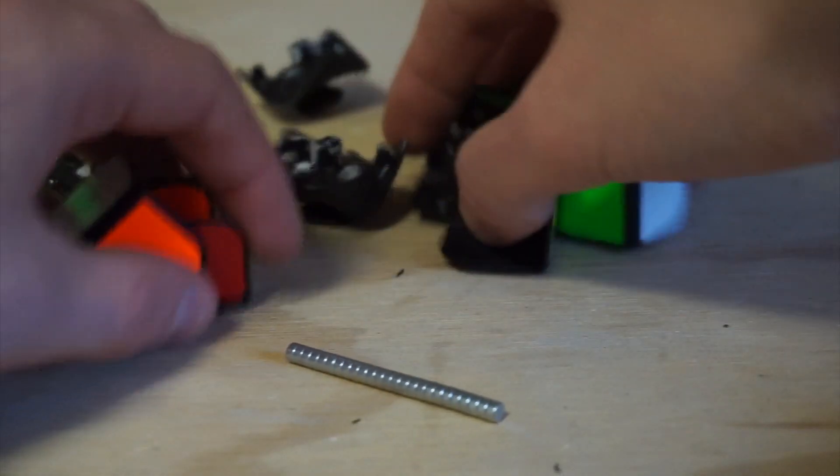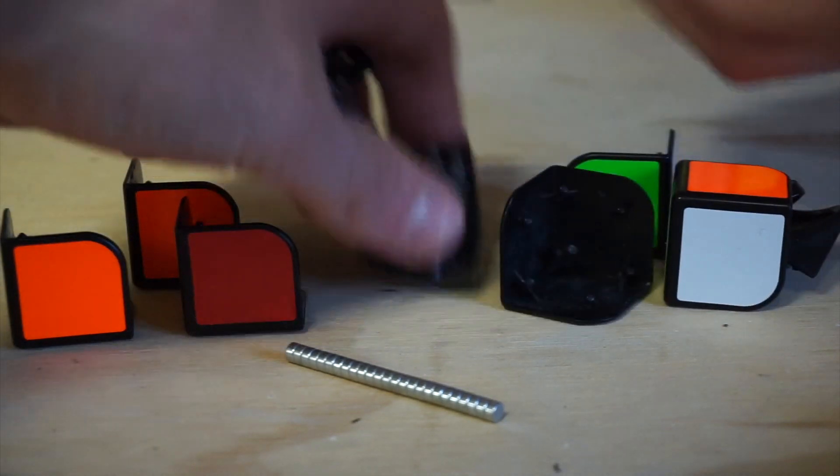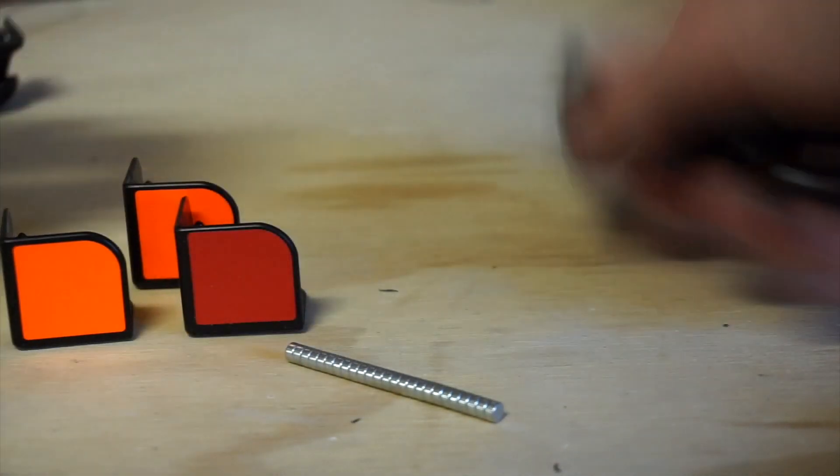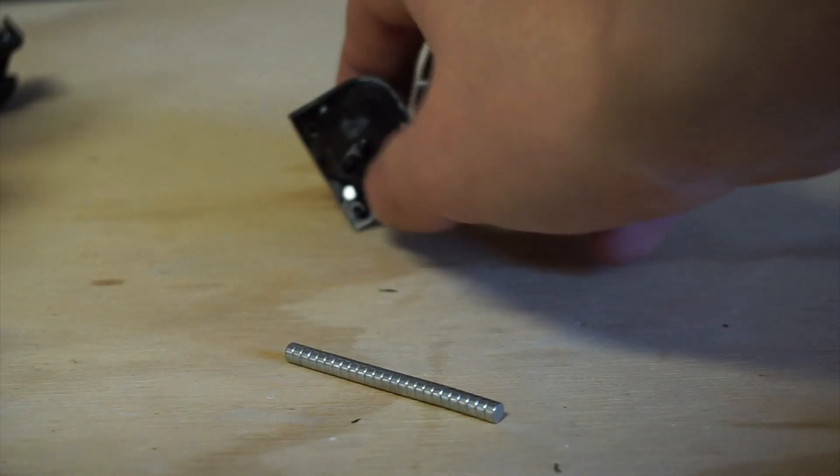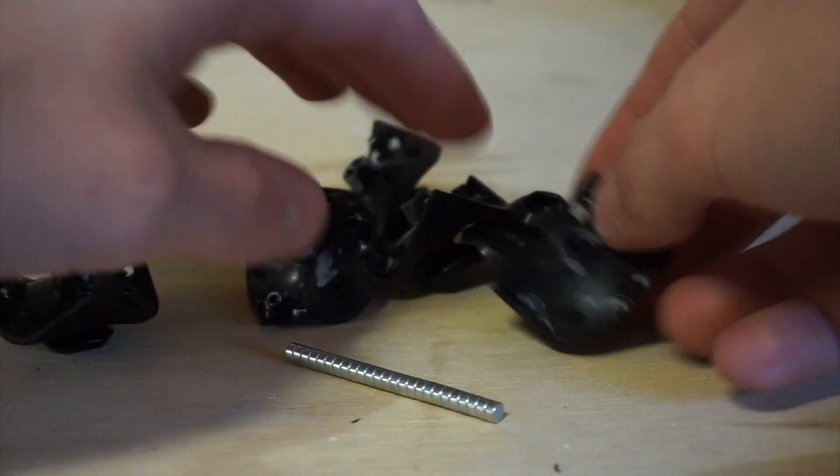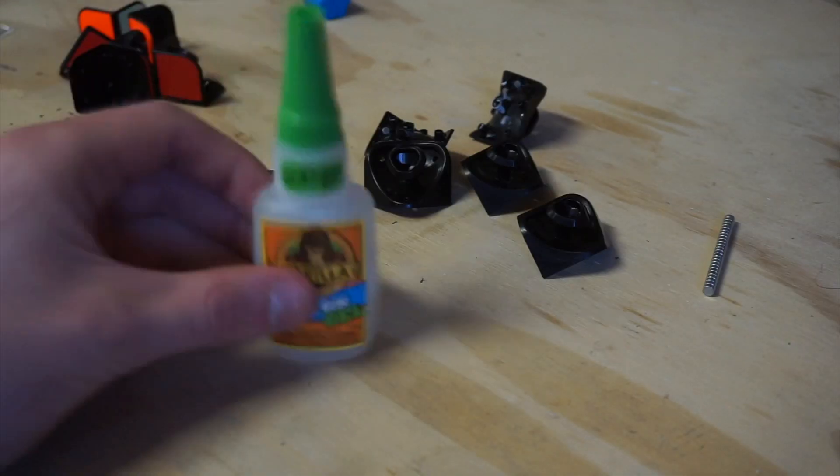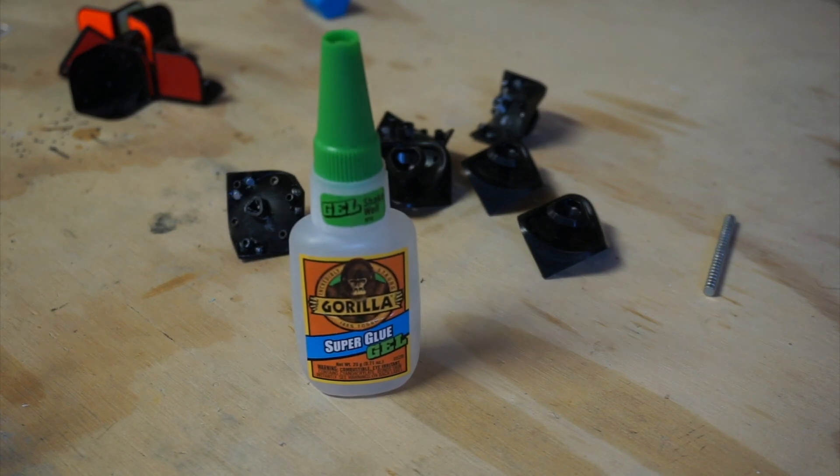After I'd done the same thing to all the different pieces, I took all the outer caps and put them to the side and took the rest of the pieces and got them ready to glue the new magnets onto them.